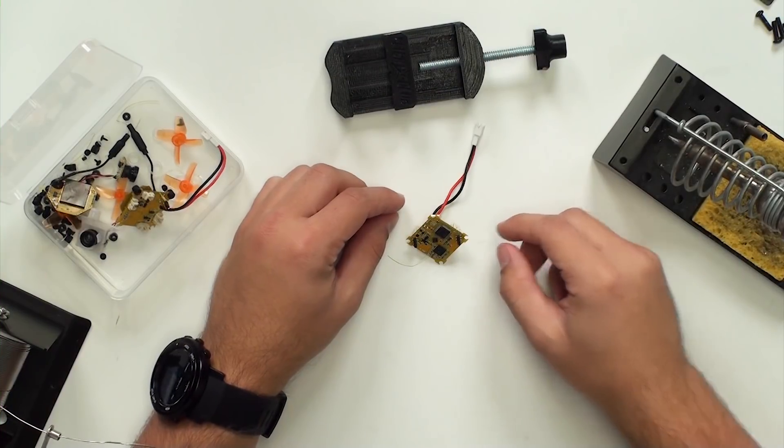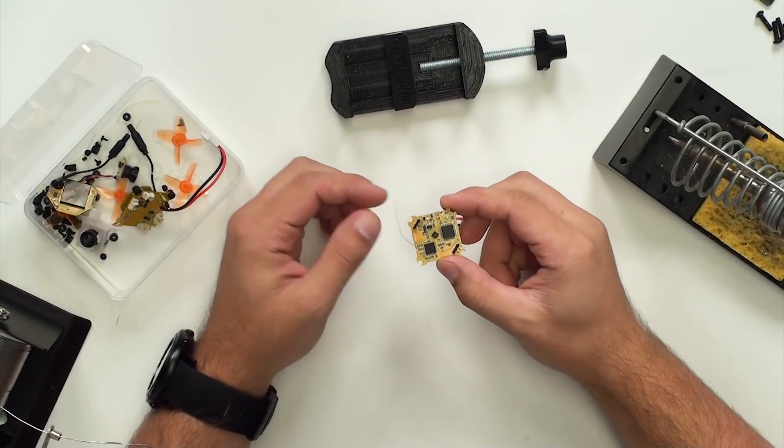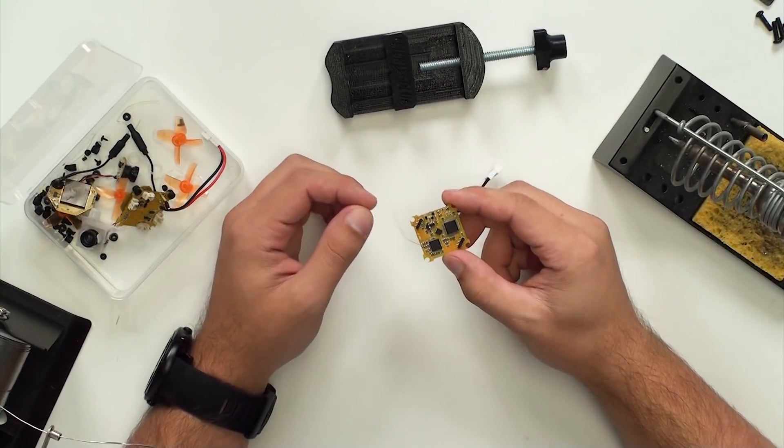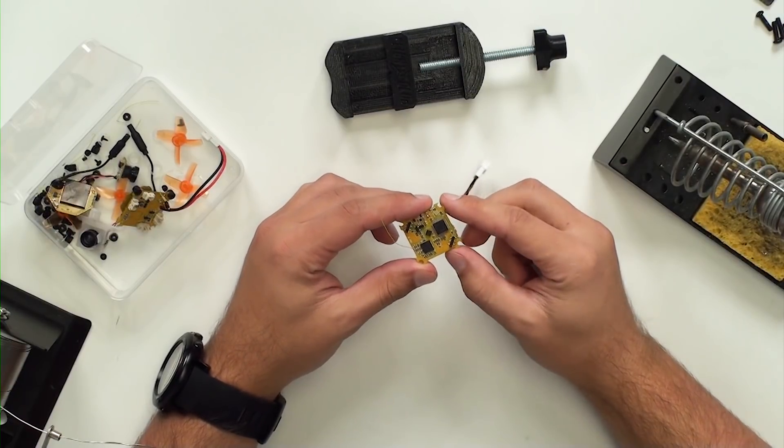Hey guys, James with NewbieDrone here. Today we're going to be showing you how to solder new replacement RX antennas onto the B-Brain V2, or to bridge the solder pad so you can use the onboard internal antenna on the flight controller.